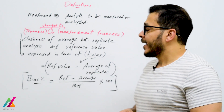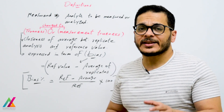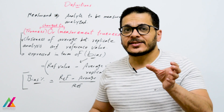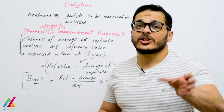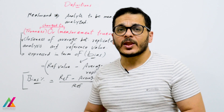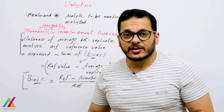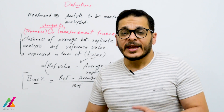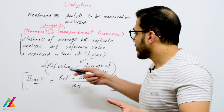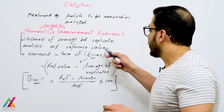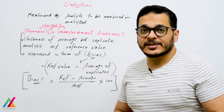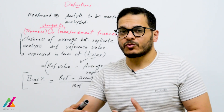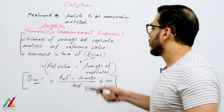Trueness is the closeness of the average of replicate analyses to a reference value. If you have a certified reference material with known concentrations, you perform replicate analyses and calculate the average. Bias equals the reference value minus the average of those replicates — it is expressed as deviation from the true value. Bias percentage equals: (reference minus average) divided by reference, multiplied by 100.